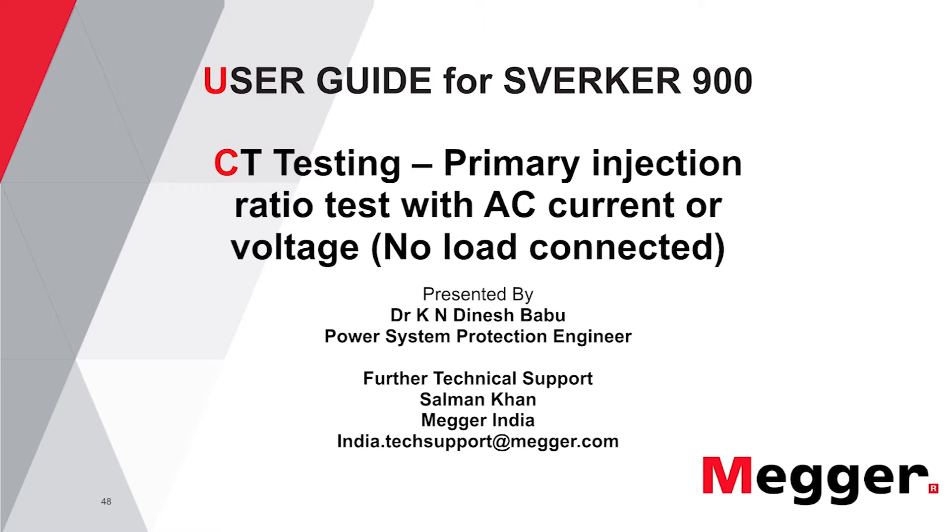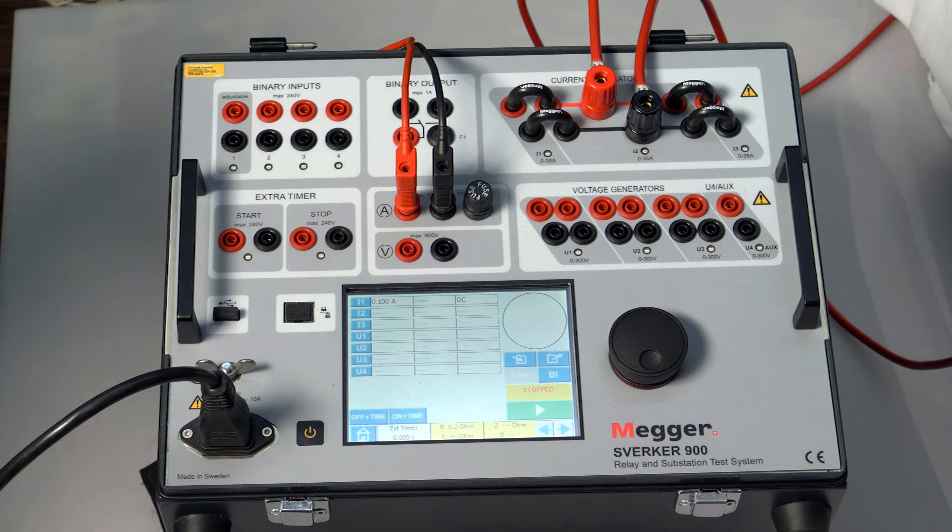CT testing, primary injection ratio test with AC current or voltage, no load connected. In the ratio test, the CT is performed by connecting the CT primary to the current source. The source has to be wired as per the recommendation to ensure it can carry the required current for the test.